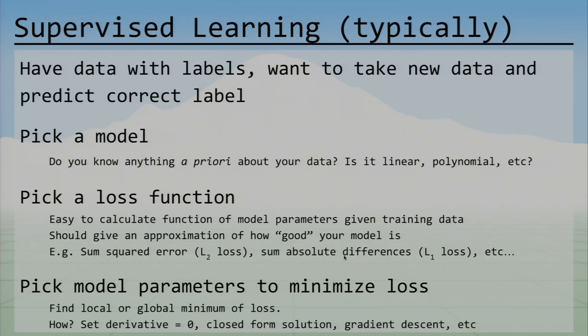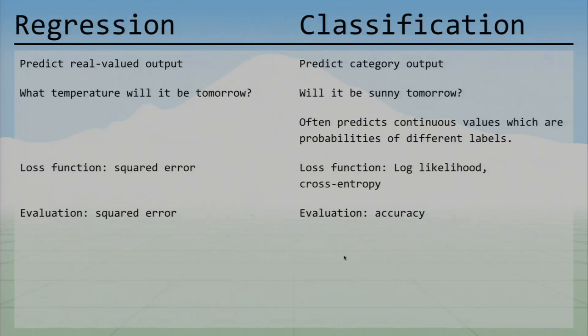After picking our model and loss function, we want to minimize the loss by finding the right model parameters — finding a global or local minimum. One approach is setting the derivative equal to zero for a closed-form solution. When that's not possible, we do something like gradient descent.